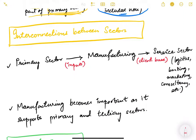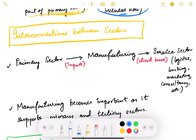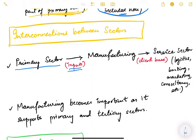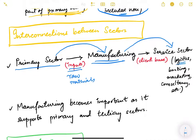Now let us see the interconnection between different sectors. The primary sector provides inputs or raw materials to the manufacturing or secondary sector. The manufacturing sector in turn is a client base for the service sector — services like logistics, banking, marketing, consultancy, and information technology are mostly used by factories and companies who are manufacturing something. They need transportation to move goods, banking for transactions, marketing services, and consultancies to solve problems or provide digital solutions.